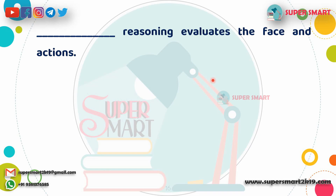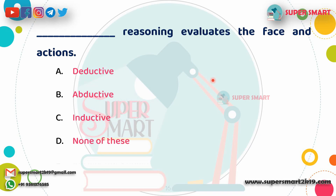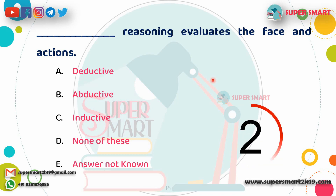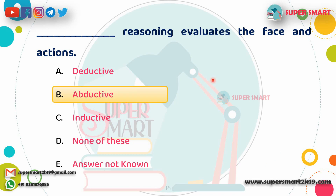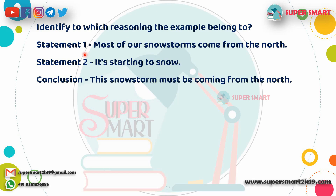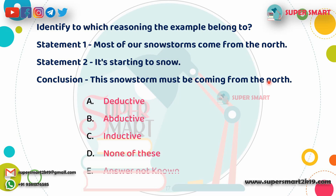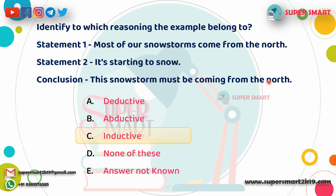Next question: Dash reasoning evaluates the phase and action. Now, from these statements: Most snowstorms come from the north. It starts to snow. Conclusion: This snowstorm must be coming from the north. What type of reasoning is this? Answer: Inductive reasoning.